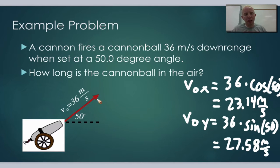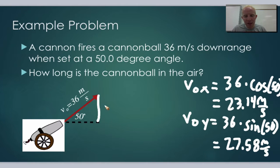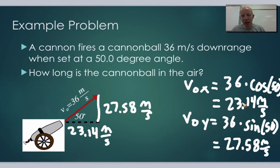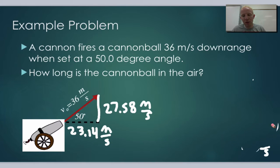So at this launch angle, the vertical component is 27.58 meters per second and the horizontal component is 23.14 meters per second. Those are our respective velocity components — we'll keep those in mind as we proceed.